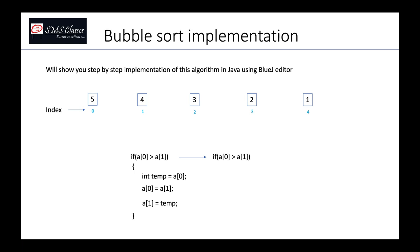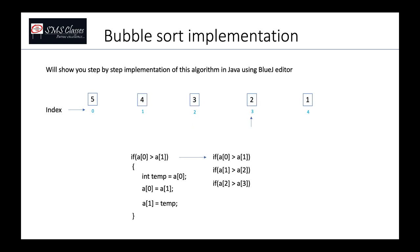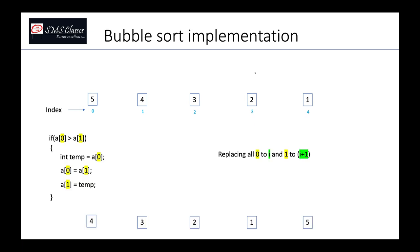We need to repeat the comparison for all adjacent pairs: (0,1), (1,2), (2,3), (3,4). The first index moves from 0 to 3, so we write a for-loop: int i = 0; i <= 3; i++. The second element is always i+1. We substitute a[i] and a[i+1] throughout the swap logic.